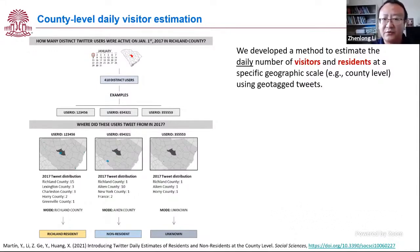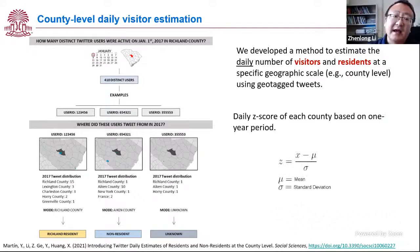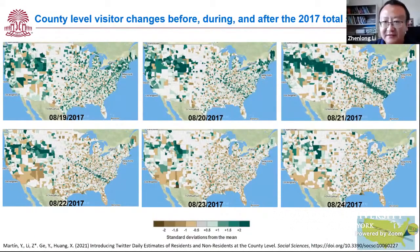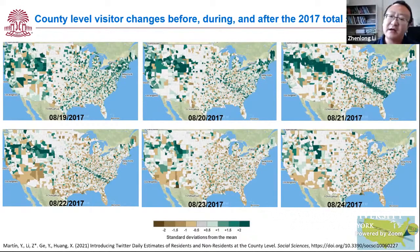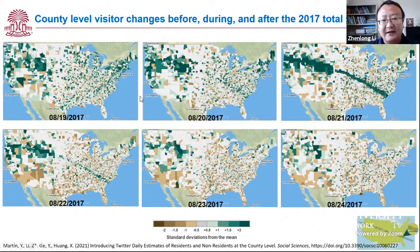For each county, we use Twitter data to estimate how many visitors are present on a specific day. As validation, here is the result for 2017 — we know there was a total solar eclipse in the U.S. You can see that on August 21st, 2017, there is a very clear green belt showing more Twitter visitors in that region on that specific day. Even after the eclipse, you can still see a blue belt, but much weaker — people started to leave that region. This shows the spatial-temporal dynamics of visitor changes at the county level across a large geographic scale.